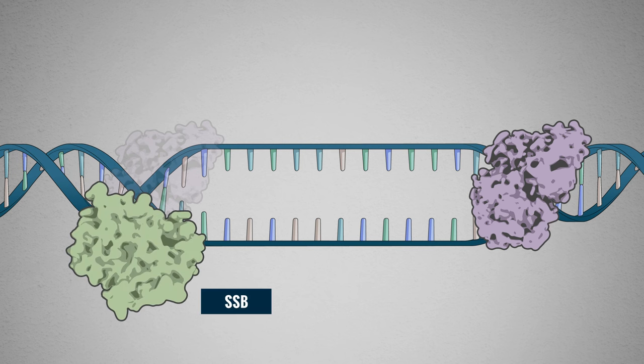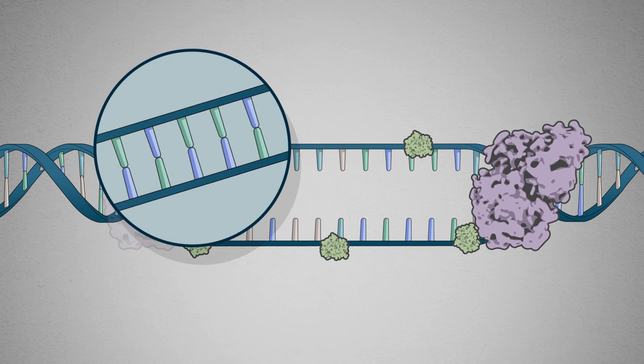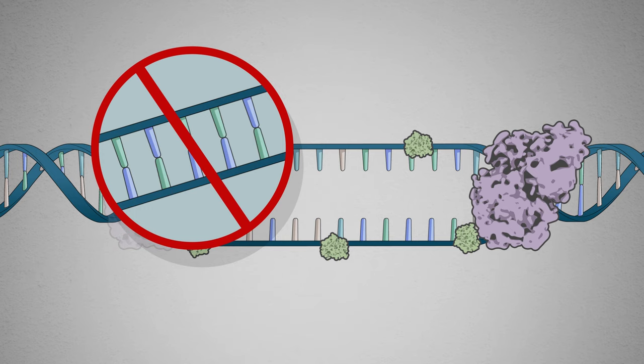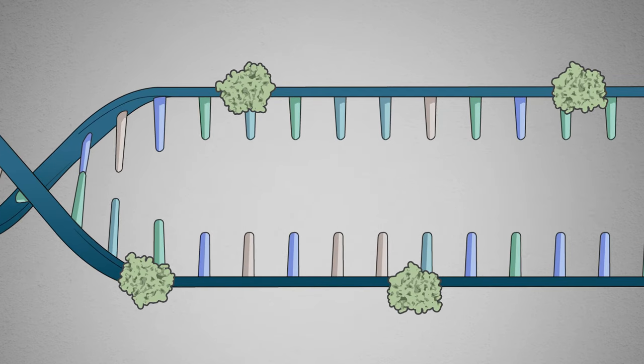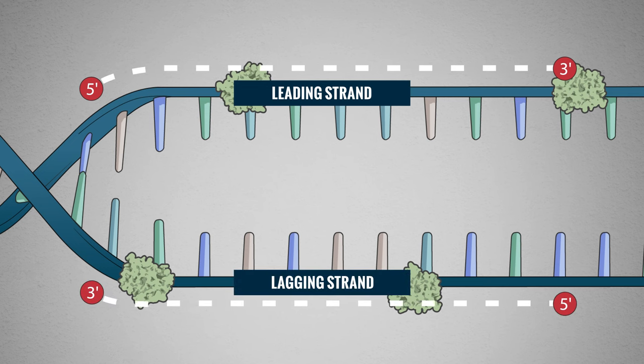Single-strand binding proteins, or SSBs, coat the single DNA strands to prevent them from re-annealing or snapping back together. The parent strand of DNA running in the 3' to 5' direction toward the fork is called the leading strand. The opposite strand is called the lagging strand.